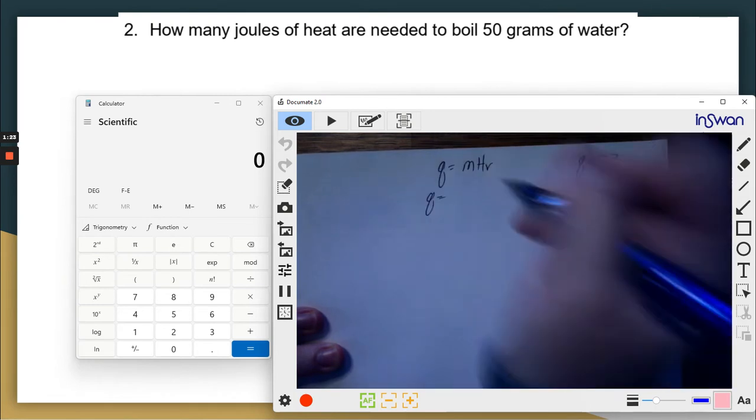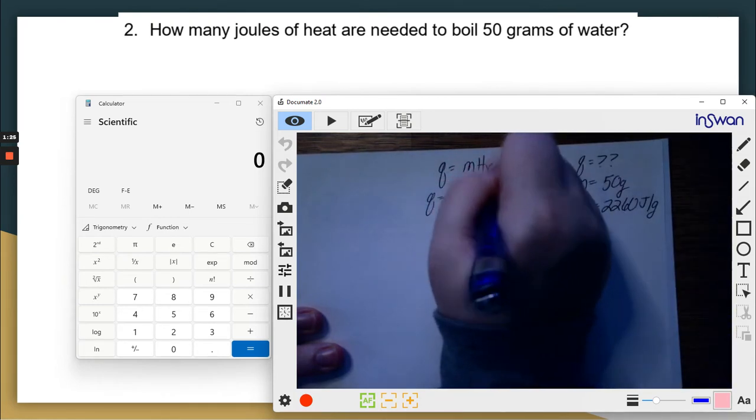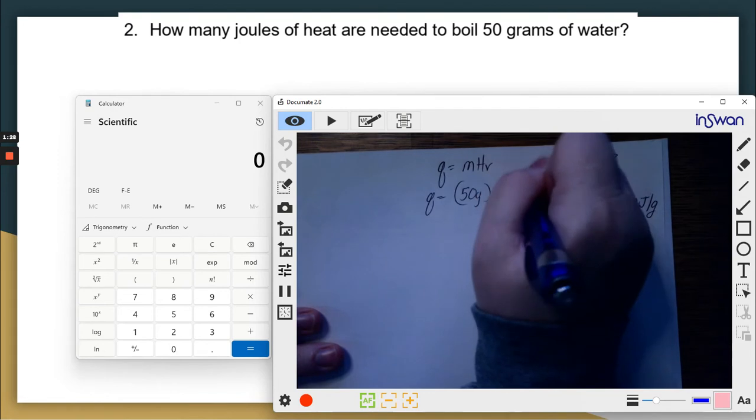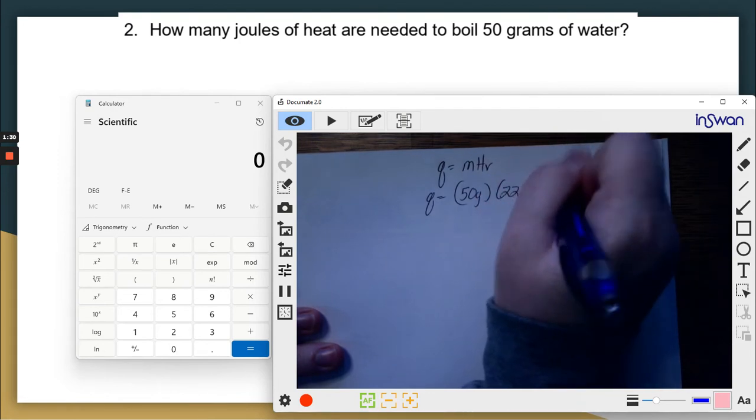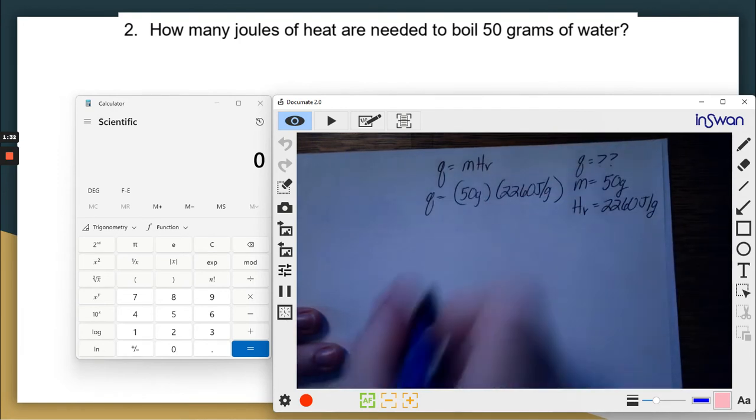Mass, 50 grams times the heat of vaporization, 2,260 joules per gram. Now, when it's per gram, I'm going to write it slightly differently for a second.